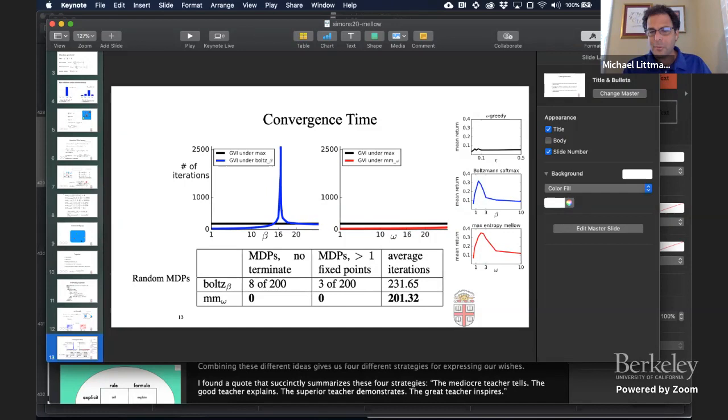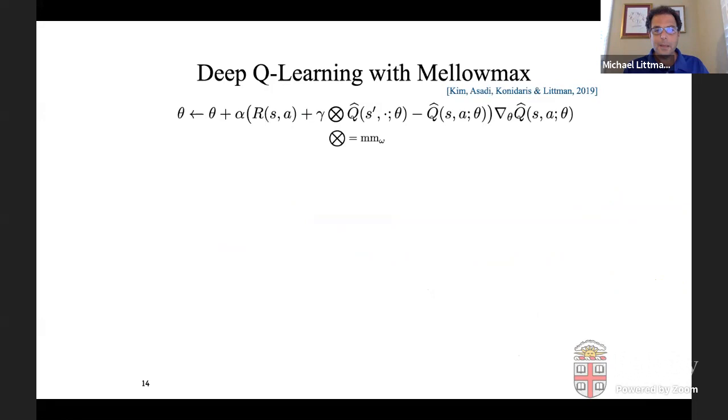And we got slightly better performance from Mellowmax when we set the omega parameter just so. But we got very good performance over a wide range of values, actually both for Boltzmann and for max entropy, but not so much for epsilon greedy, which is kind of a terrible way of doing exploration, even though people seem to do it all the time. People.